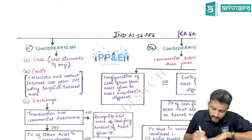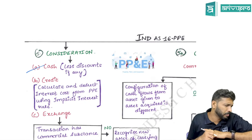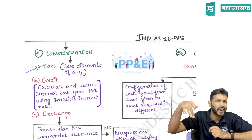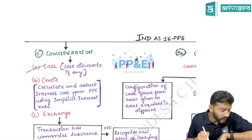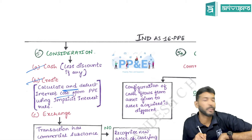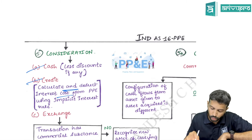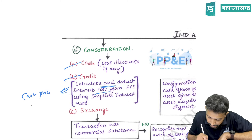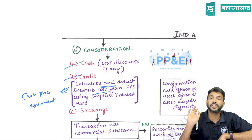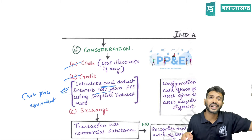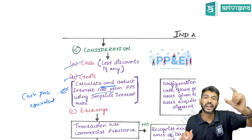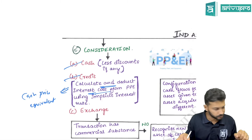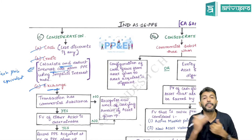If PPE is purchased for cash, the journal entry is simply PPE account debit to cash or bank. If PPE is purchased on a deferred credit basis, record the PPE at cash price equivalent. The difference between the transaction price and cash price equivalent is the time value of money — interest charges — which go to P&L over the contract duration.